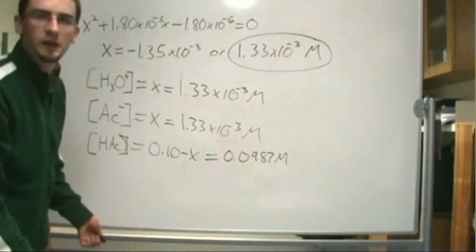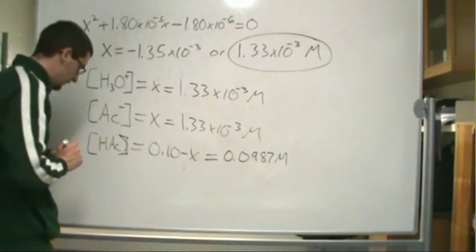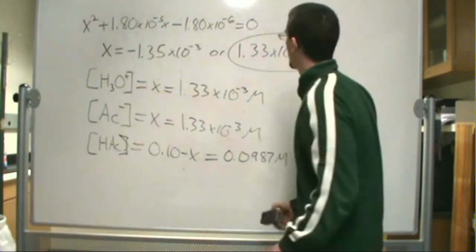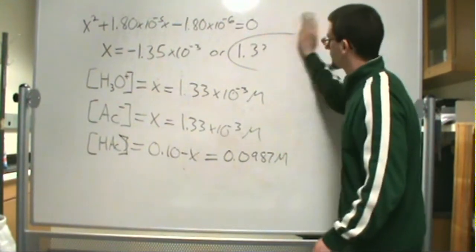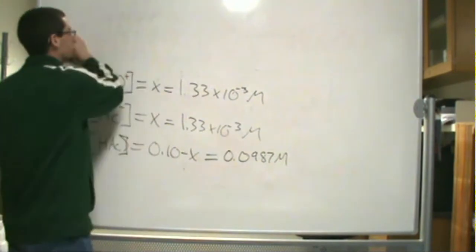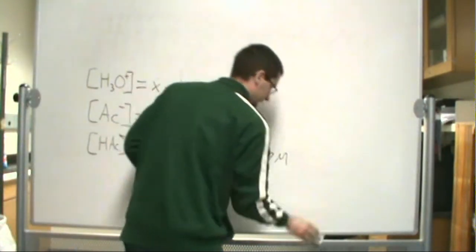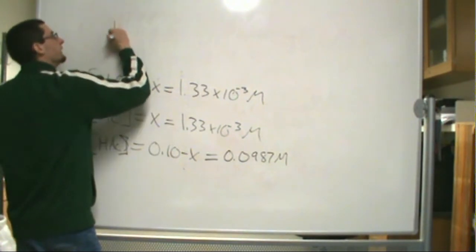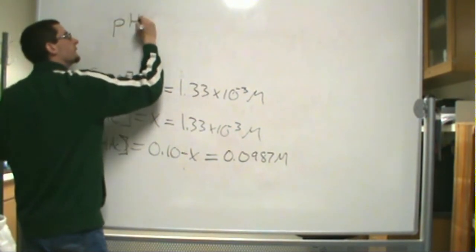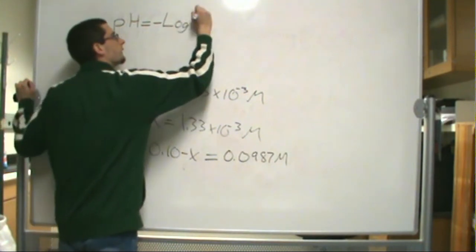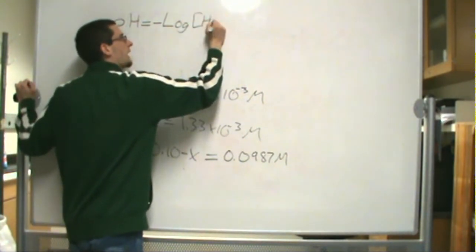What about our pH? Well, if you remember the equation for pH, it's actually just the negative log of your hydronium ion concentration. So now that we have our hydronium ion concentration, all we need to do is just plug and chug.